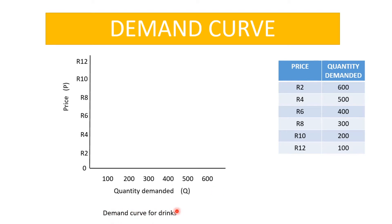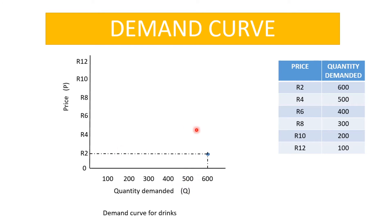Now we move on to the plotting part. At a price of two rand, 600 drinks were demanded — where the two rand and 600 drinks meet is where we plot a dot. At a price of four rand, 500 drinks were demanded — where the two meet is where we plot. At a price of six rand, 400 drinks were demanded, and we plot where the two meet.